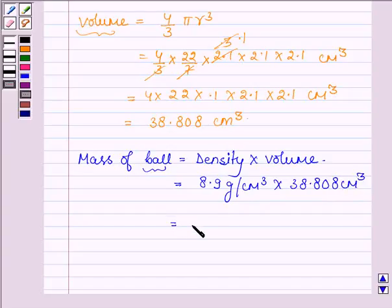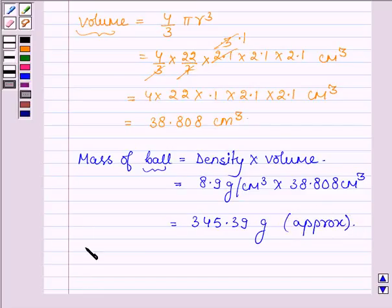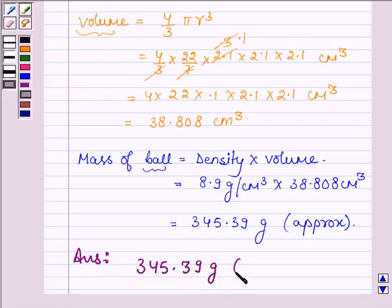This simplifying comes equal to 345.39 grams approximately. Hence our answer is the mass of the ball having diameter 4.2 centimeters is 345.39 grams approximately.